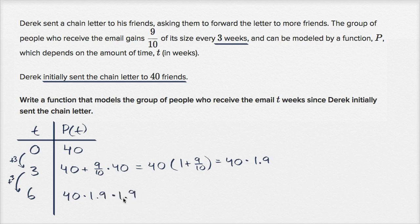We're going to grow by another 9 tenths. Growing by 9 tenths is the same thing as multiplying by 1 and 9 tenths. The 1 is what you already are, and then you're growing by another 9 tenths. So this is the same thing as 40 times 1.9 squared.